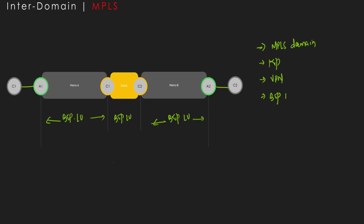There is a problem — there are quite a few labels to manage end-to-end. Also, there are what are called stitching points. We need to stitch this IGP domain with the next one, and BGP neighborship is established between these two. Based on this neighborship, a label is generated. We will have one transport label, on top of that a BGP-LU label, and then a service label — used for inter-domain intra-area crossing, and BGP-LU label for metro-to-core crossing, along with L2 or L3 VPN service labels.